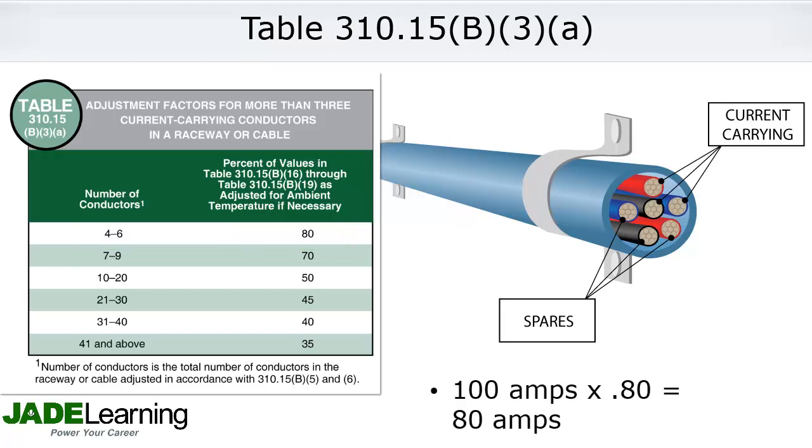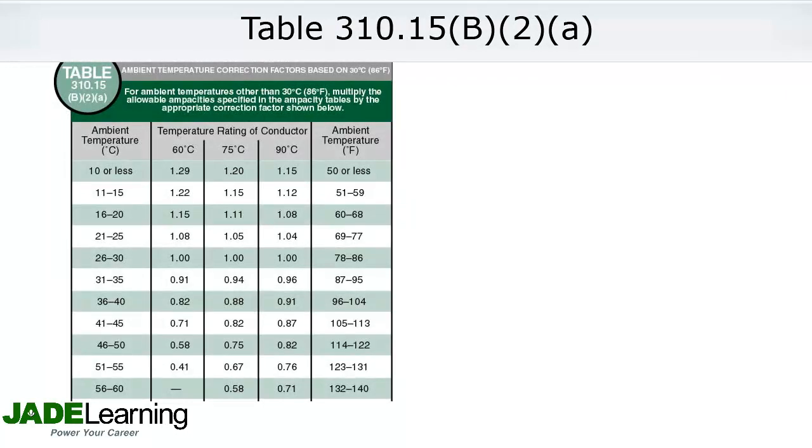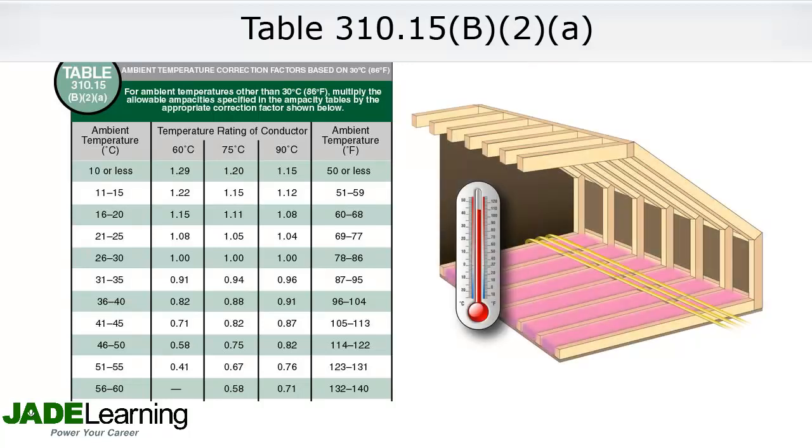When the ambient temperature is hotter than 86 degrees Fahrenheit, table 310.15(B)(2)(A) must be used to calculate how much current the conductor can carry. If the temperature in an attic is 110 degrees Fahrenheit, a type NM cable cannot carry its full rated load.